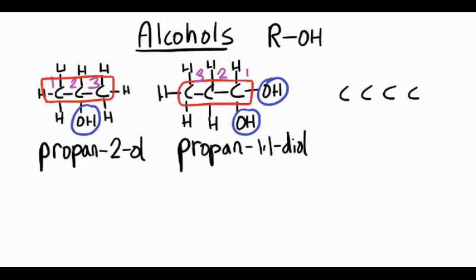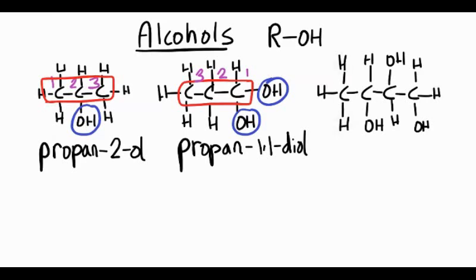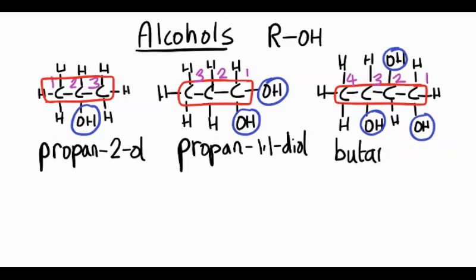Let's try another example — this time four carbons in the chain and three OH groups. We number the carbon atoms from right to left to keep the numbers as low as possible: one, two, three, four. We have three OH groups on the first, second, and third carbons. So it's butane — four carbons in our chain — with OH groups at positions 1, 2, 3, making it butan-1,2,3-triol.